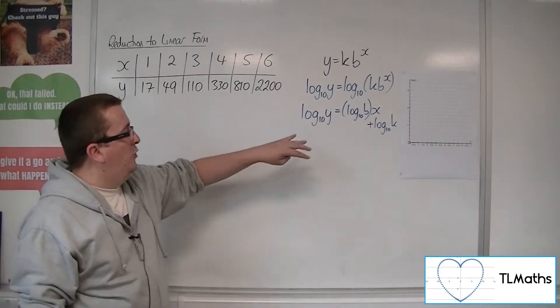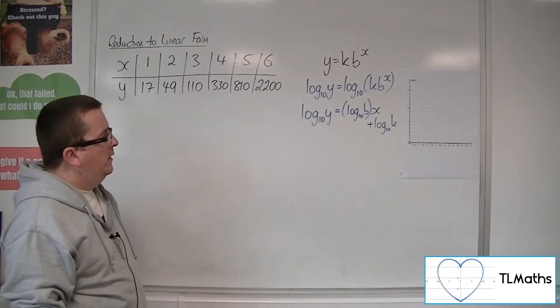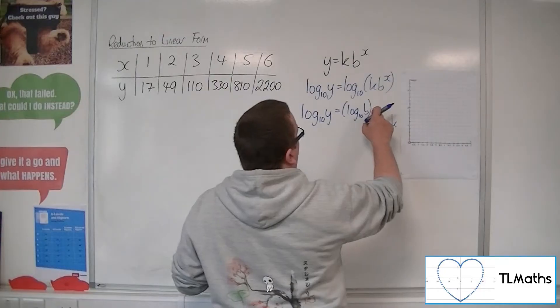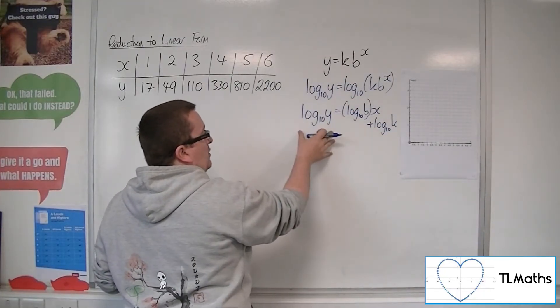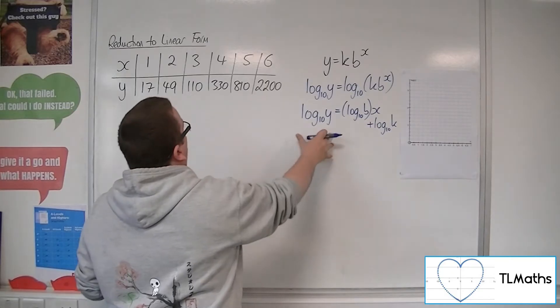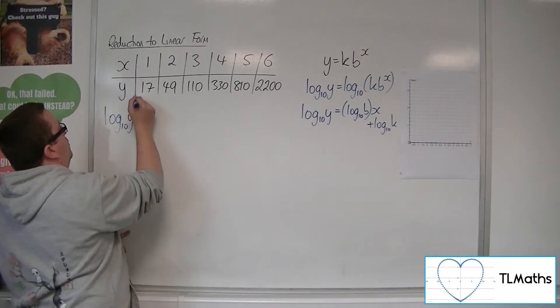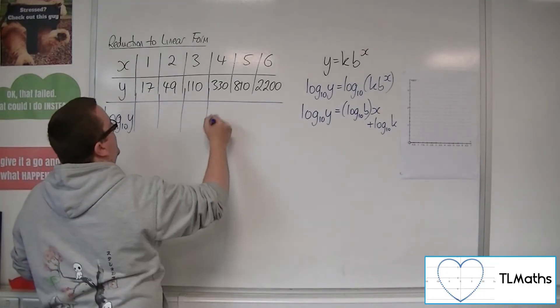So this is now in a form of y equals mx plus c, so what I'm seeing is that x is still the variable, not log 10x, x, and y has become log 10y. So I need to work out log 10y. So I know what x is already, so I don't need to write that down again.